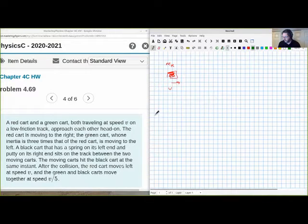Then we've got the green one. It's going to be a head-on collision, so they're heading towards each other. So the green one is over here, moving to the left, also at speed v. So the same initial speed going the opposite direction. We don't know its inertia, but we do know that its inertia is three times that of the red one.